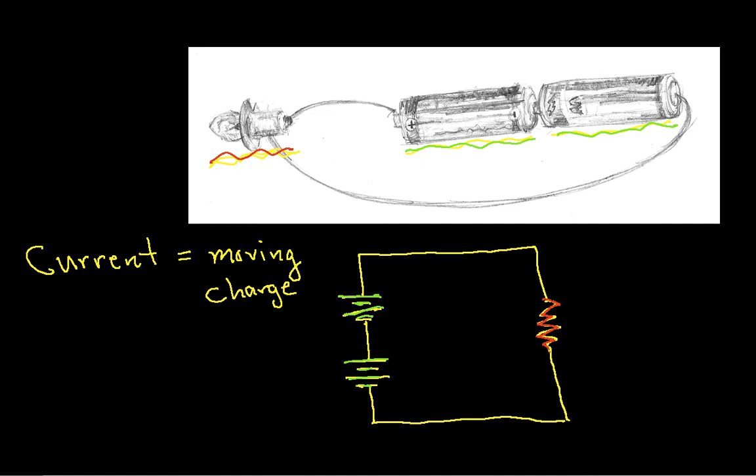We measure current. We might talk about the current flowing through this wire. When we talk about that, we mean charge that's moving through the wire.